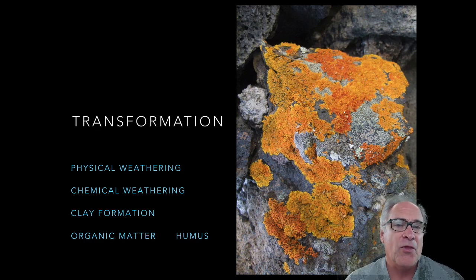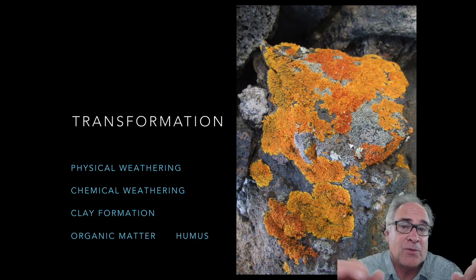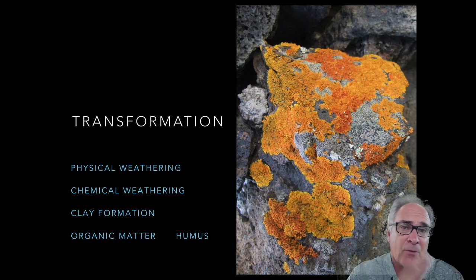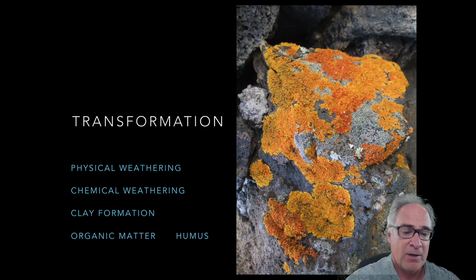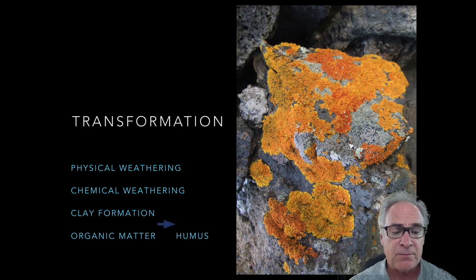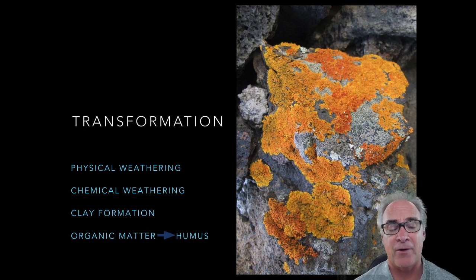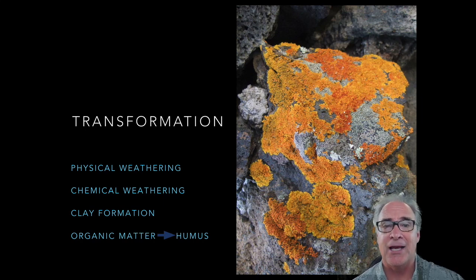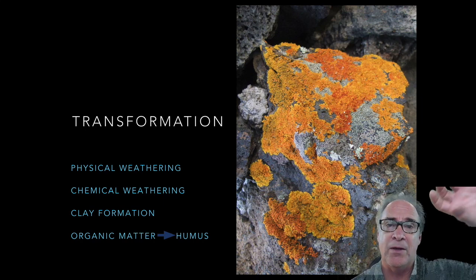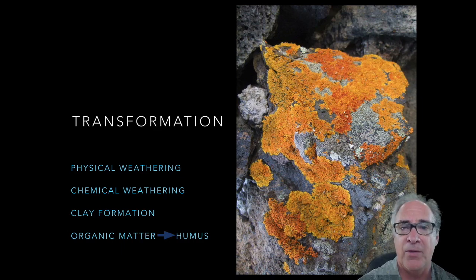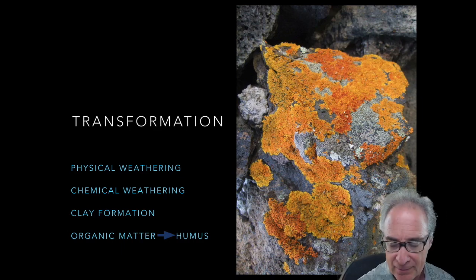One of the things that will eventually take place is clay formation — as particles get smaller and smaller through continued erosion and weathering, you'll reach that point. Another great example is organic matter transforming into humus, which happens between the O layer and the A layer.